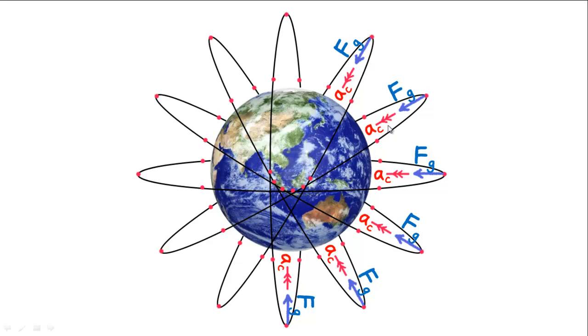But any orbit which is inclined to the equatorial plane is obviously not geostationary. Such orbits bring them in and out of the two hemispheres.